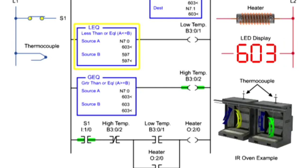Using the less than or equal to and greater than or equal to instructions addressed to the same integer file, the source values of A and B are compared to control the heater.